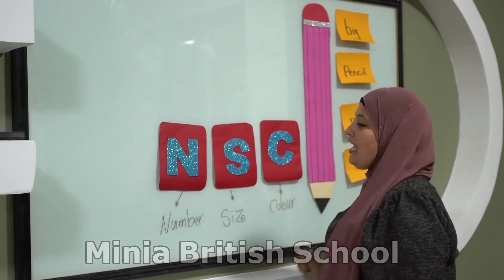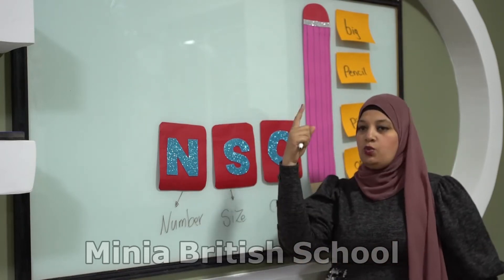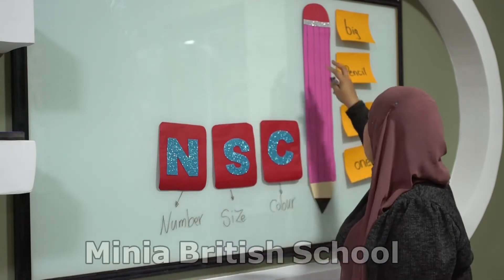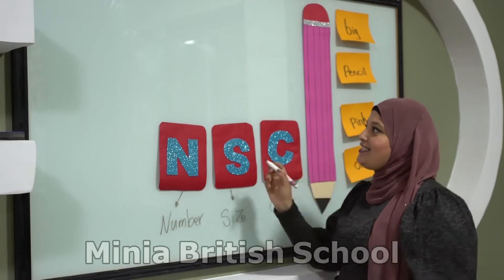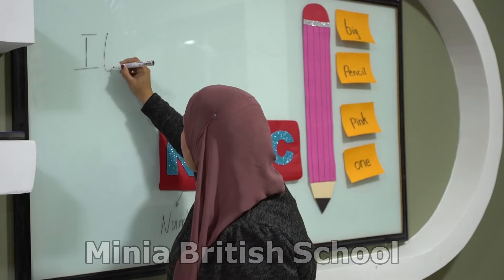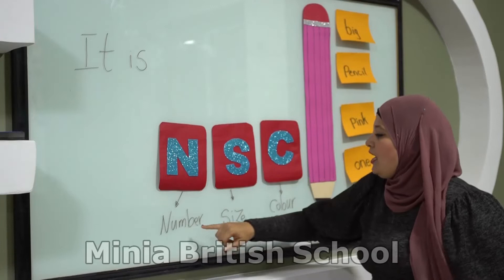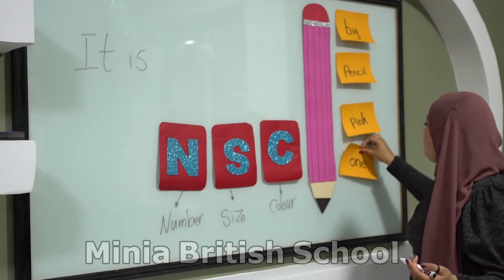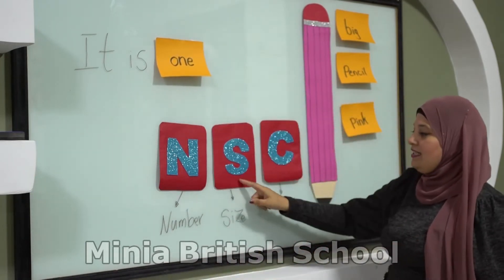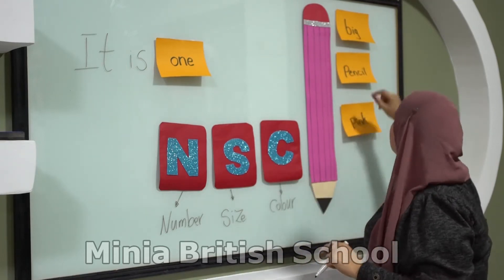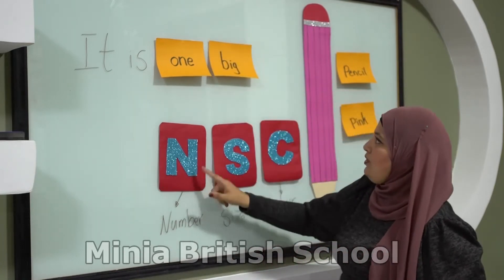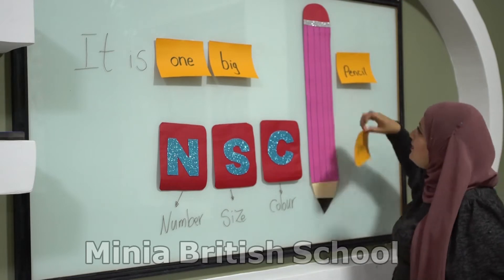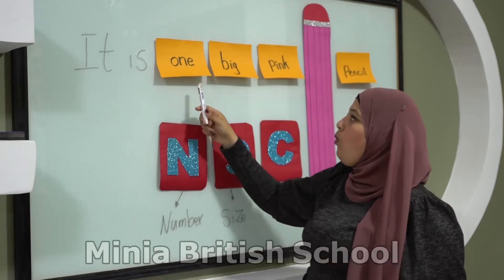I have to remember N, S, C. Now let's start. This pencil — is it singular or plural? Is it one or more than one? It is one pencil. Excellent. So shall I use 'it is' or 'they are'? I think it's one pencil, so I will use 'it is.' I will start with 'it is.' Then I apply N, S, C: Number — how many pencils? One. Size — is it big or small? It's a big pencil, so I will use 'big.' C for Color — what is the color? Pink. So I have: it is one big pink.